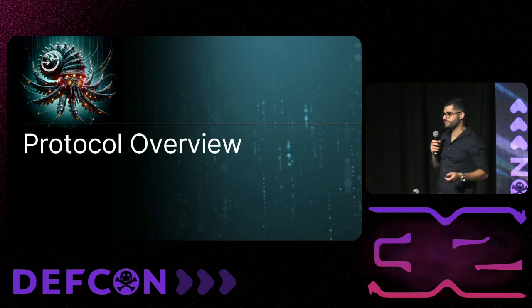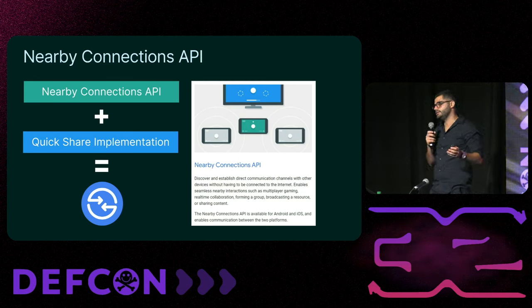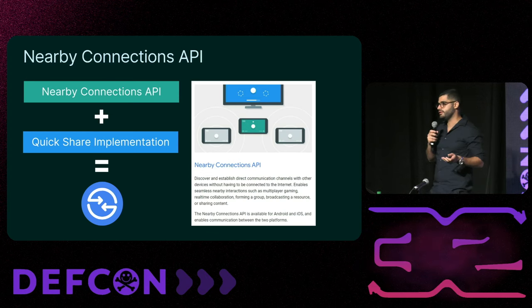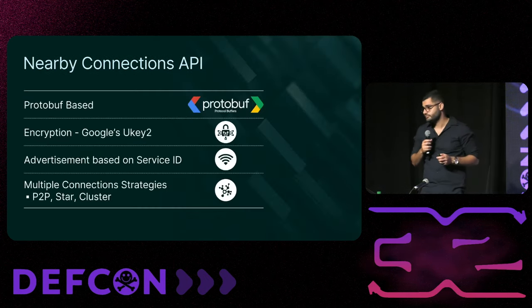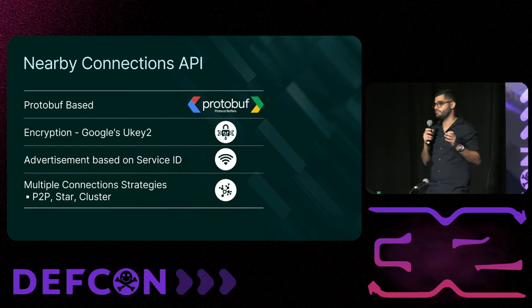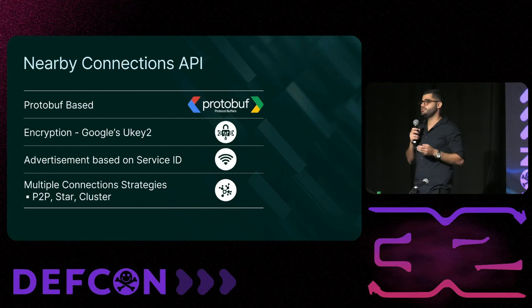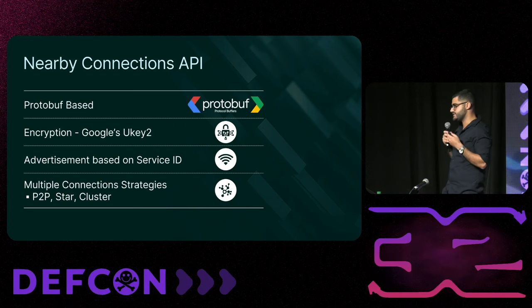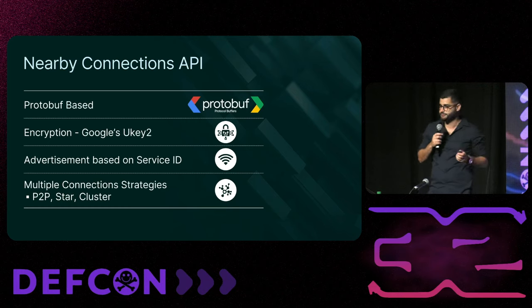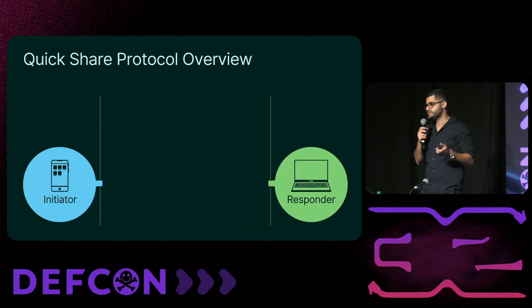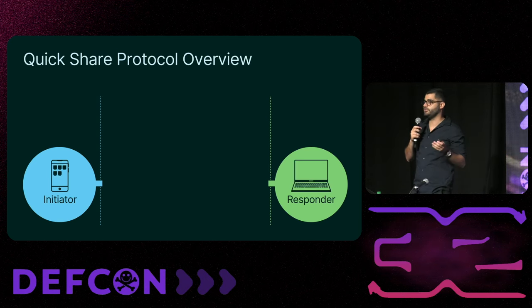Now that we can sniff QuickShare packets, let's take a deep dive into the protocol. There's an API called the Nearby Connections API used to discover, connect, and exchange data with nearby devices in real time, regardless of network connectivity. QuickShare uses this API with its own implementation. It's based on protobuf for serializing structured data, it's mostly encrypted using Google's uKey2 library, and each app is uniquely identified by a service ID. It has multiple connection strategies; QuickShare uses the peer-to-peer strategy with an initiator and a responder.